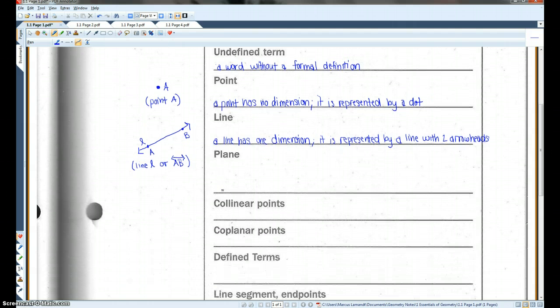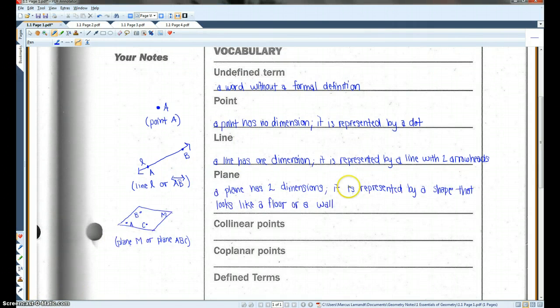All right, a plane. A plane has two dimensions. It is represented by a shape. It looks kind of like a floor or a wall. Okay, this would be an example of a plane. We could call this plane M. The M in the little corner over here. Or you could name it by any three points contained in the plane. In this case, I made points A, B, and C. So we could call it plane ABC or BCA, CBA, any combination of these letters.